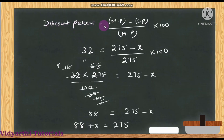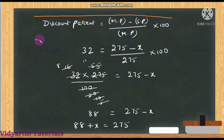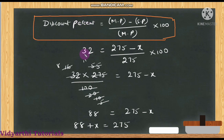Substituting values: 32 = (275 − x) ÷ 275 × 100. Moving 275 across gives multiplication: 32 × 275 ÷ 100 = 275 − x. Cancelling and calculating: 32 × 275 ÷ 100 = 88.